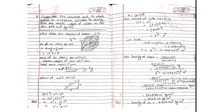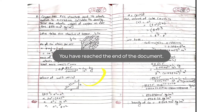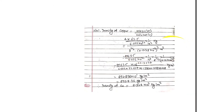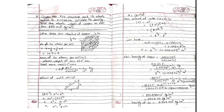In summary: copper has FCC structure with four atoms per unit cell. Each atom has 63.5 amu; to convert to kg, divide by Avogadro's number and by 1000, then multiply by four atoms. For volume, use the Pythagorean theorem on the face diagonal to get a = √(8r²), then compute V = a³. With the given radius, the density of copper is calculated. Thank you for listening.